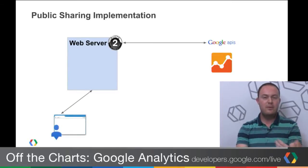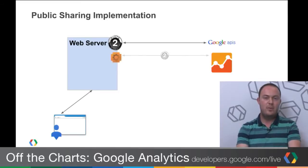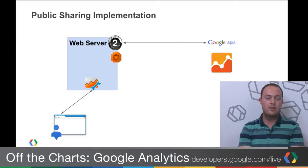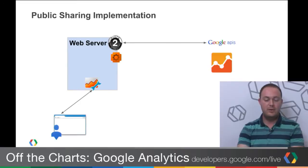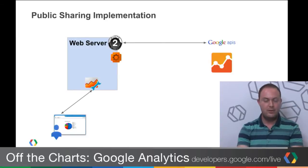Once you have that token, you need to save it and manage the whole process of refreshing tokens and making requests. Once someone visits your website and you want to serve a page with a browser share chart, you'd have to make the request to Google Analytics through the API using that stored token, get back a response with the requested data, then parse that data to pull out what you want to display. Then you'd transform it into a format that works with, for example, the Google Charts API — specifically data table format — and do all of that yourself server-side.